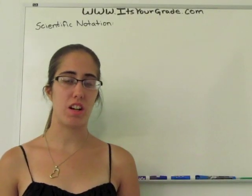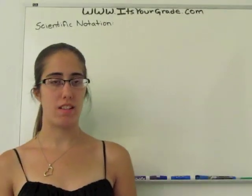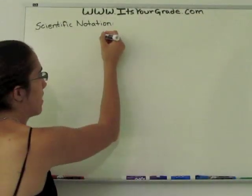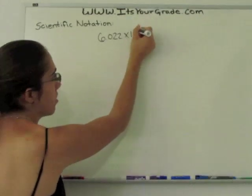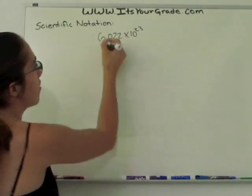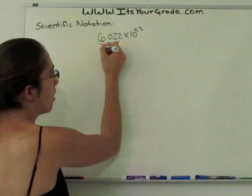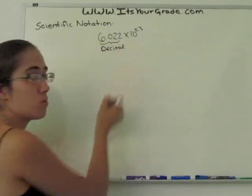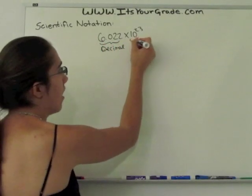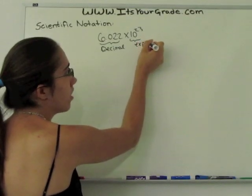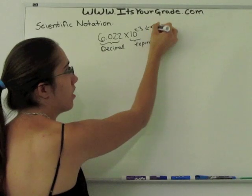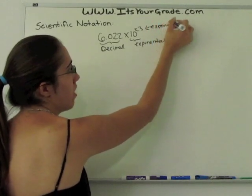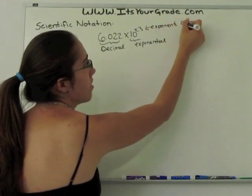Hi, I'm Sarah with itsyourgreat.com. Today we're going to talk about scientific notation. Scientific notation looks a little something like this: 6.022 times 10 to the 23rd. You have the decimal part, which is always a number between 1 and 10. You have the exponential part, and then you have the actual exponent. The exponent we write with the symbol n.